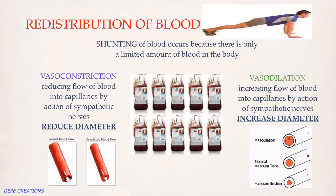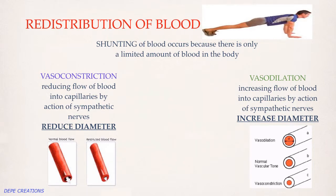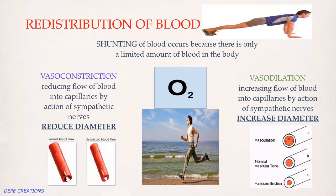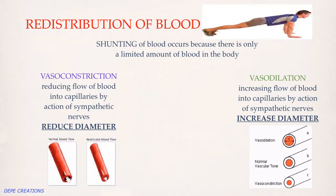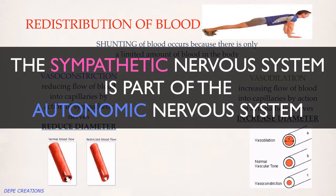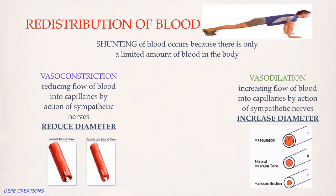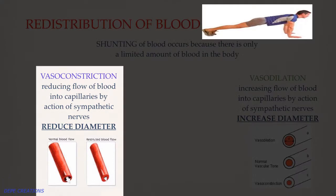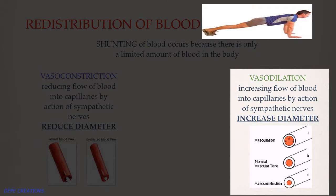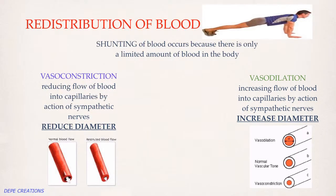We only have a limited amount of blood, so it is moved around the body as and when it's demanded. This means there must be a redistribution of blood to get more oxygen to the muscles that require it — without this we couldn't perform at varying intensities. This shunting of blood is controlled by the sympathetic nervous system. Sympathetic nerve impulses cause vasoconstriction of the arterioles to restrict flow, or vasodilation to increase the diameter of arterioles, allowing greater blood flow to the capillary bed and more oxygen to the tissues that require it.